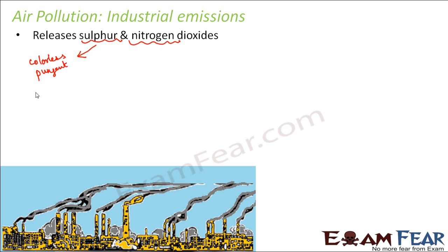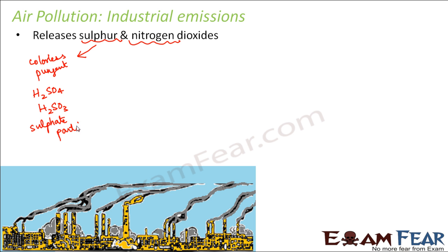Sulfur dioxide reacts with atmospheric substances to form acids like H2SO4 (sulfuric acid) or H2SO3 (sulfurous acid), and sulfate particles can also be released. These are some of the things which can be formed by sulfur dioxide. Now, what happens to these acids when they are present in the atmosphere?